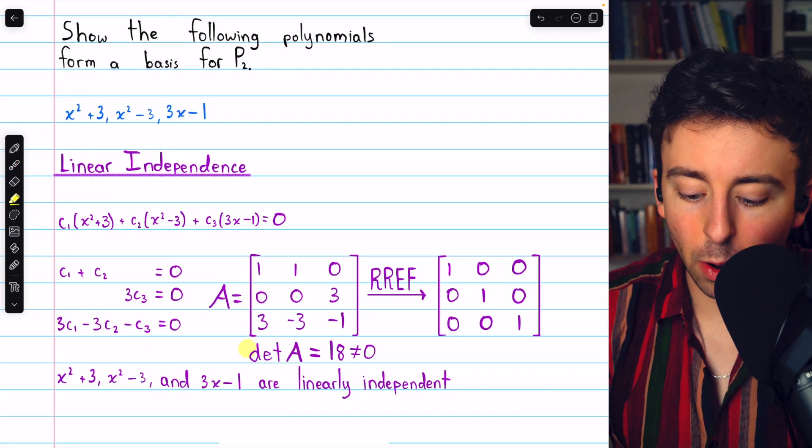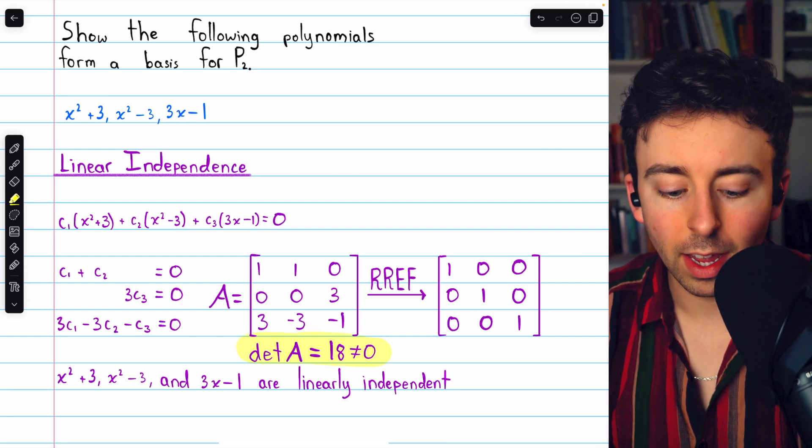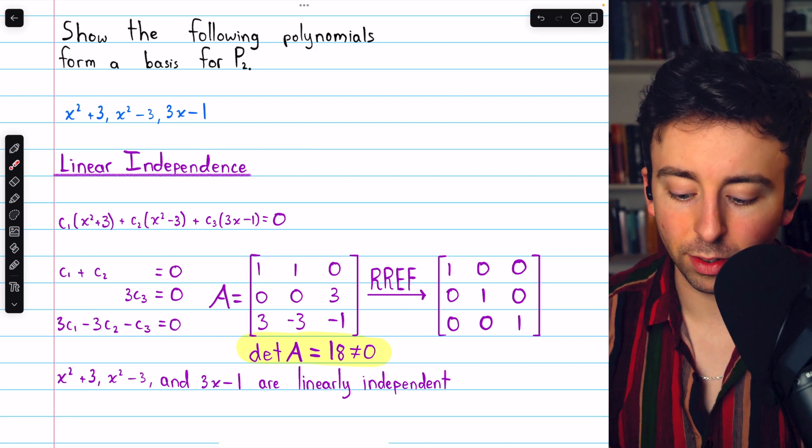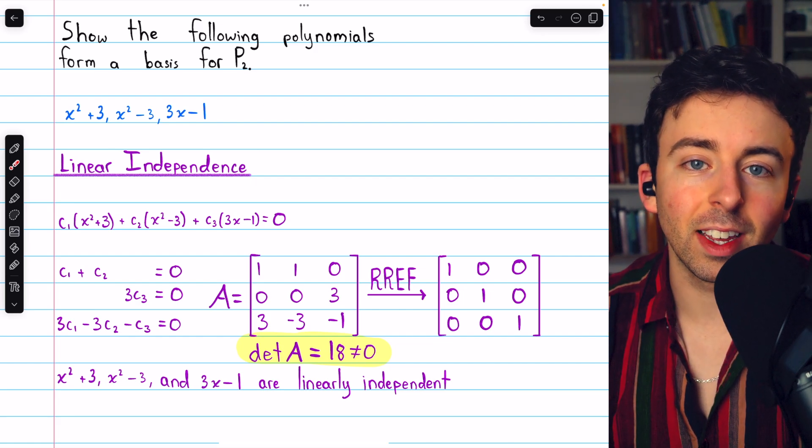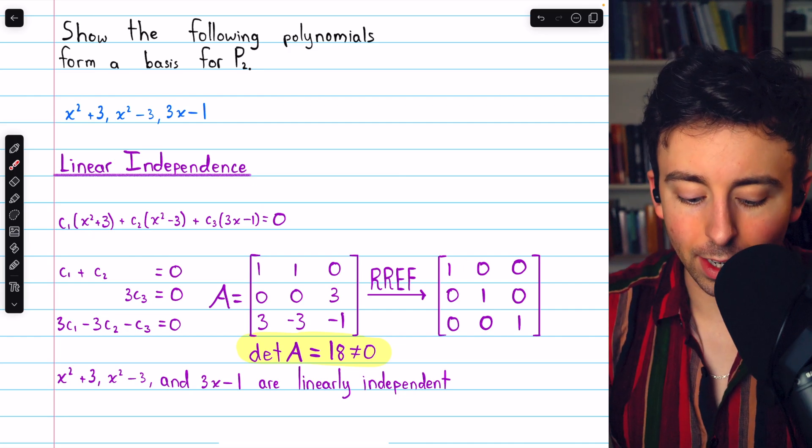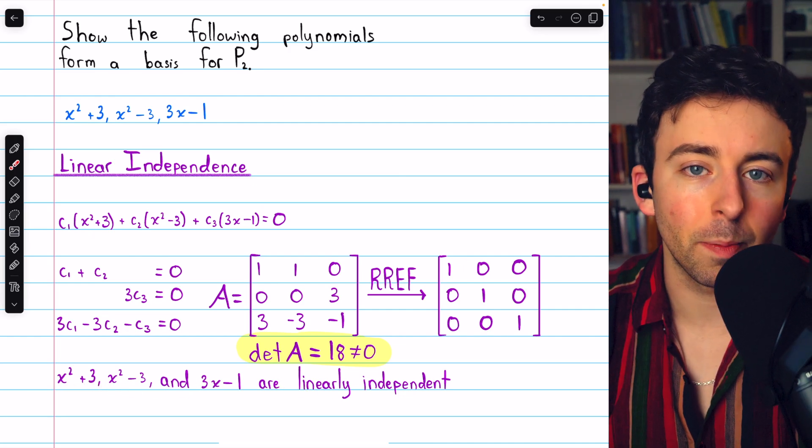The other way is to just calculate the determinant of the coefficient matrix. If you get a non-zero number, in this case we would get 18, which is non-zero, that also lets us conclude that this system has only the trivial solution. And so again, these polynomials are linearly independent.